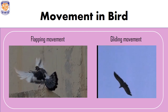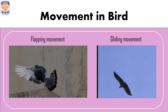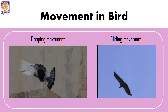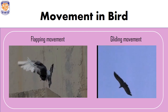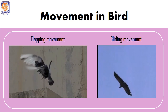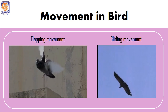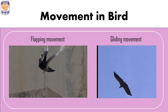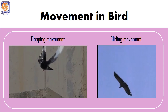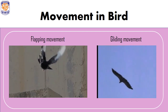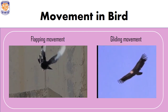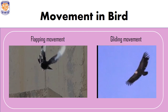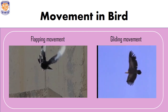In flapping flight, the wings of the bird are actively flapped up and down, which helps propel the bird forward and maintain balance. This can be seen in smaller birds such as sparrows, pigeons, and mynas.